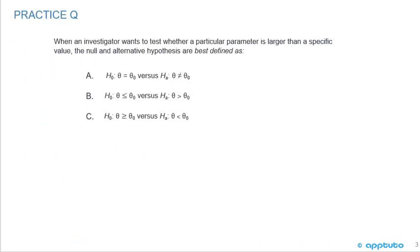We're going to finish this LOS with a quick practice question. When an investigator wants to test whether a particular parameter is larger than a specific value, the null and alternative hypothesis are best defined as: A) the hypothesis equals zero versus the alternative doesn't equal zero; B) the hypothesis is less than or equal to zero versus the alternative greater than zero; or C) the hypothesis greater or equal to zero versus the hypothesis less than zero.